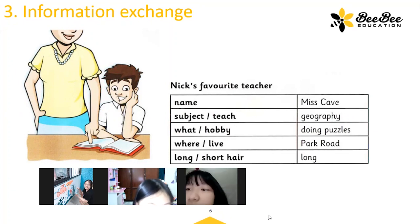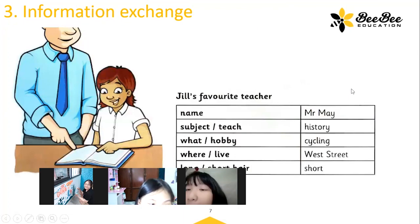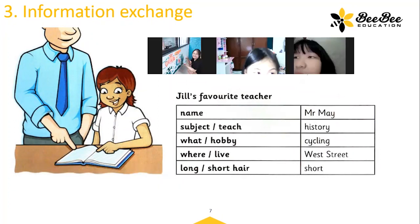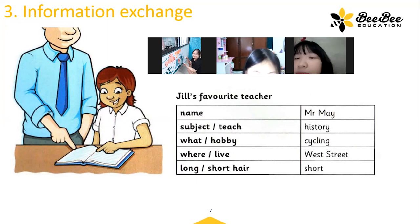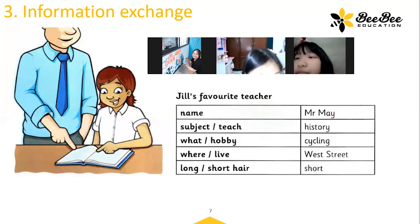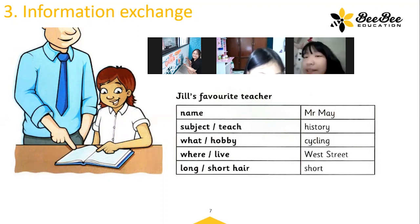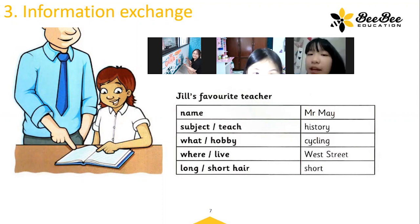Does she have long hair or short hair? Her hair is long. Okay, thank you. Now exchange roles. Bi, you ask questions about Jill's favorite teacher and Yang, you answer. What is Jill's favorite teacher's name? His name is Mr. B. What subject does he teach? He teaches history. What is his hobby? His hobby is cycling. Where does he live? He lives on West Street. Does he have long hair or short hair? He has short hair. Good job.